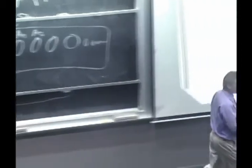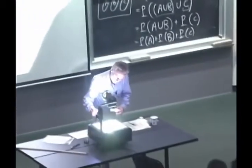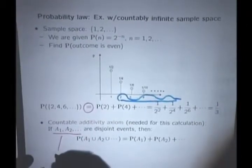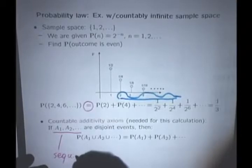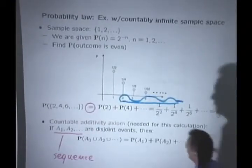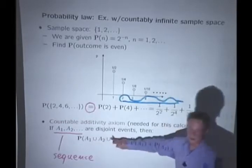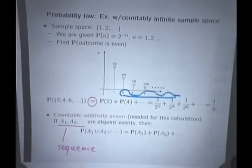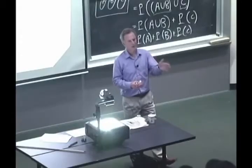A key subtlety that's involved here is that we're talking about the sequence of events. By sequence, we mean that these events can be arranged in order. I can tell you the first event, the second event, the third event, and so on.